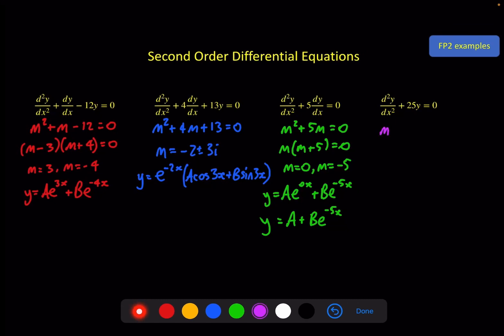Final one on this screen we've got m² + 25, so m is equal to ± 5i. So we're back to this form here but our real part is 0, so this will give us e^(0x) which is a 1, so we'll just have the bracket. So we'll have y = A cos 5x + B sin 5x. And like this one, this can happen but you cannot assume it will happen because it's a specific result of the more general form, just like this is a specific result of this more general form.